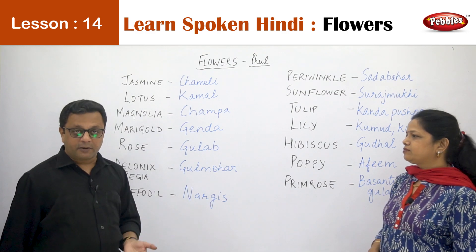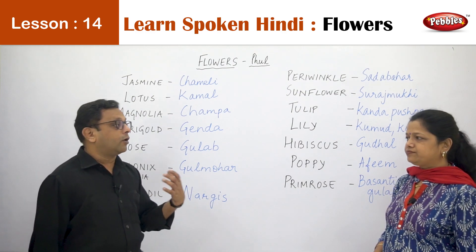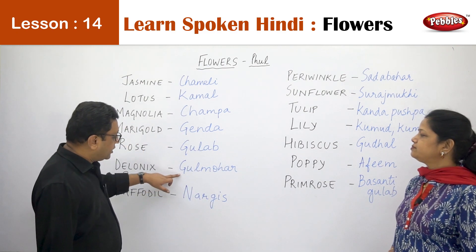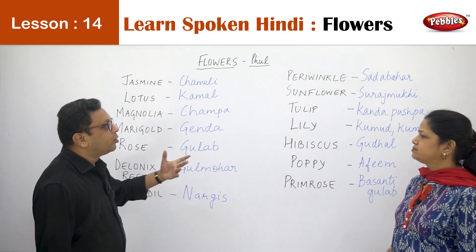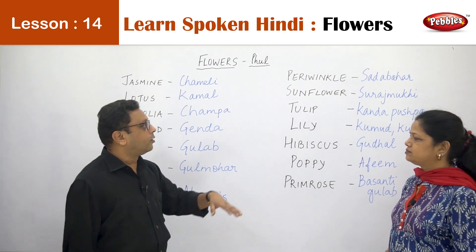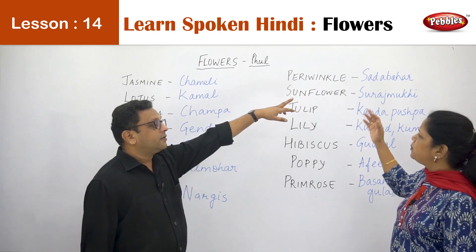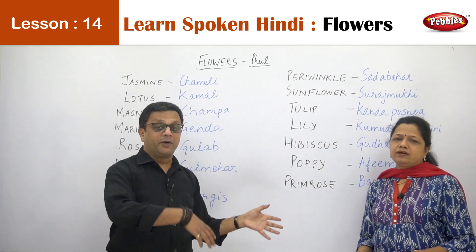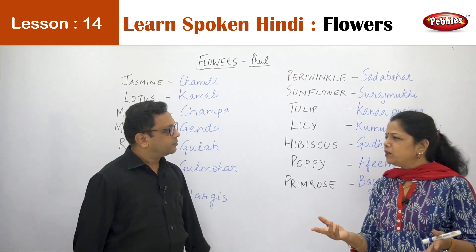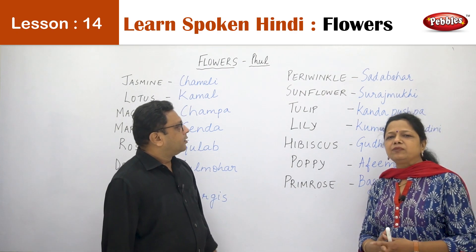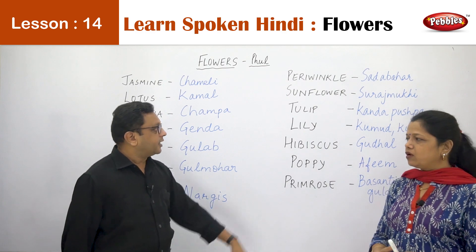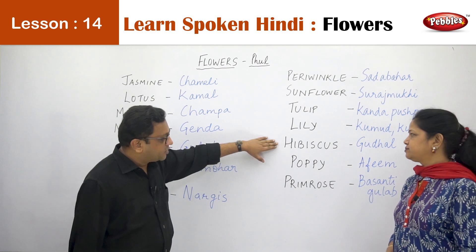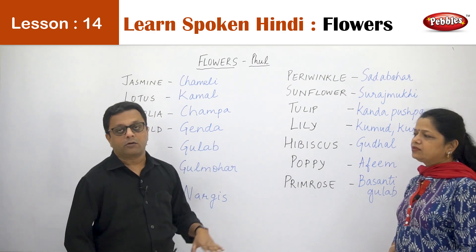Gulab is sometimes offered to God — for Goddess Lakshmi you offer the Gulab. Nargis and Gulmohar are not offered to God. Sadabahar is an ornamental flower generally not offered at temples but used at home. Suraj Mukhi is not offered. Tulip is not offered. Lily is sometimes offered. Hibiscus is offered. And Poppy and Primrose are not offered.